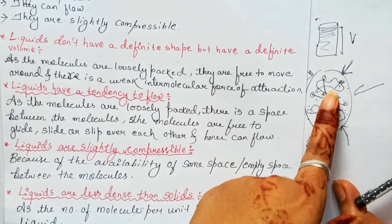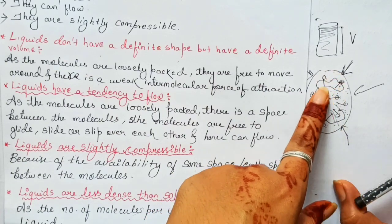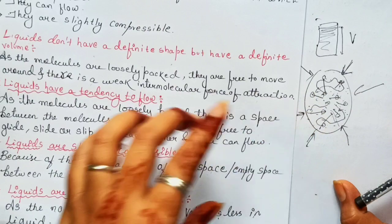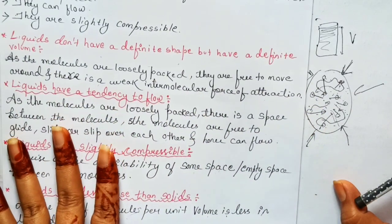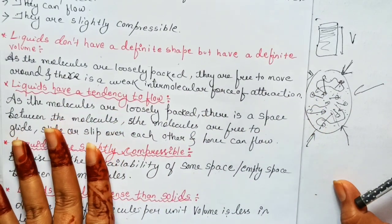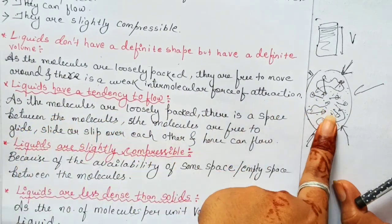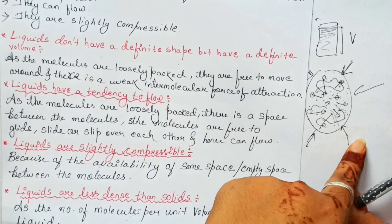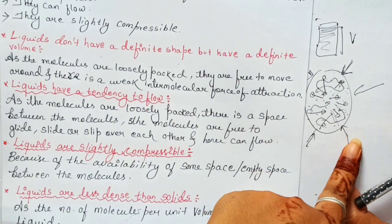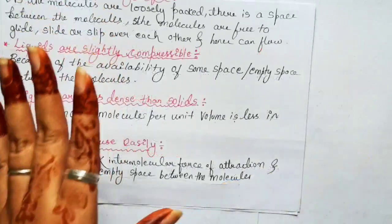Because there is intermolecular space present between the molecules of liquid, liquids are slightly compressible. That is the reason liquids are slightly compressible.